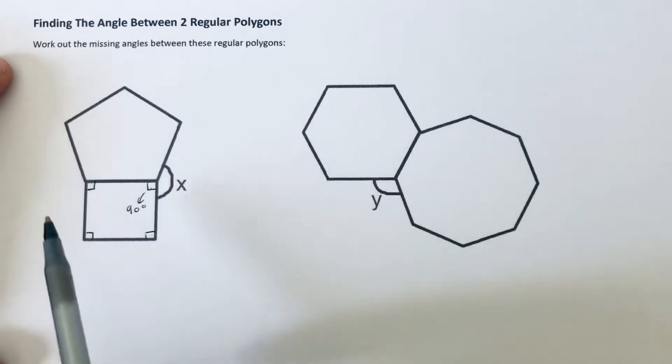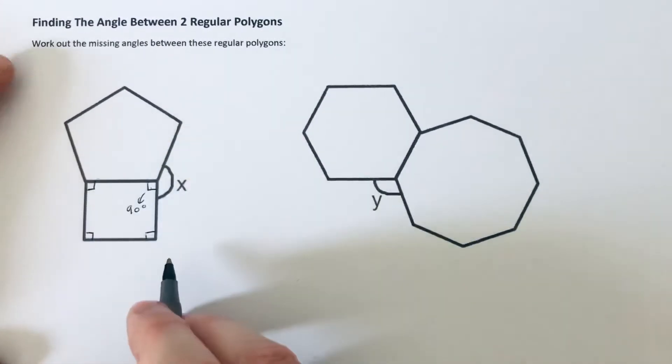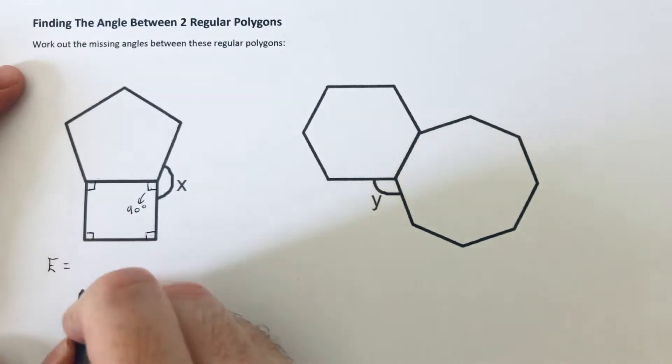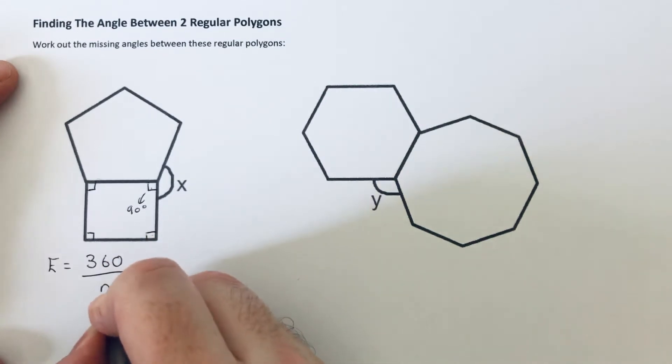So let's work out the interior angle for our regular pentagon. We can do this by using the formula for the exterior interior angle of a regular polygon. So to get the exterior angle we do 360 divided by the number of sides.